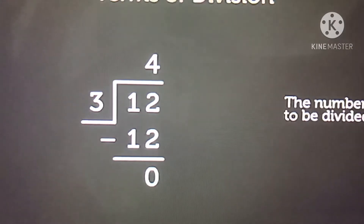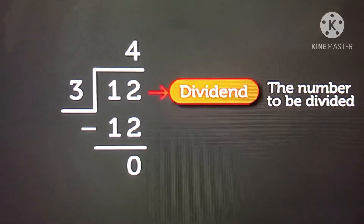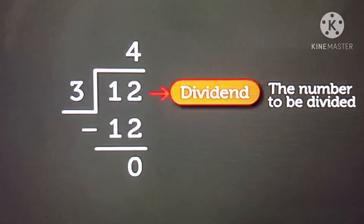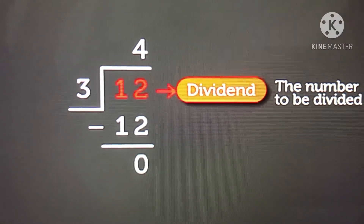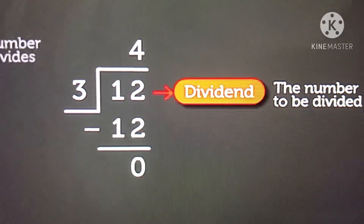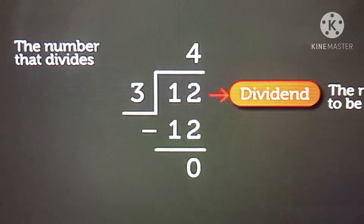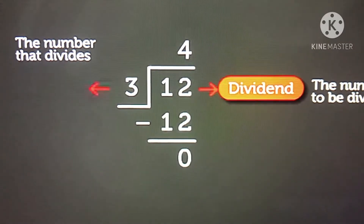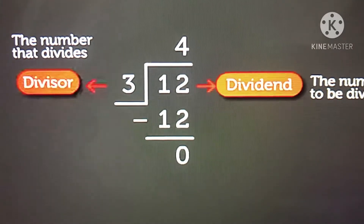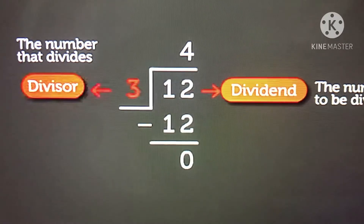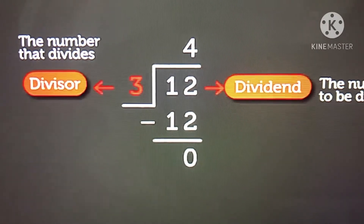The number to be divided is called the dividend. Here, the number 12 is the dividend. The number that divides the dividend is called the divisor. Here, the number 3 is the divisor.